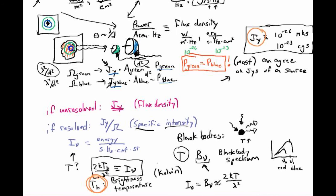Radio astronomers often use brightness temperature as a convenient way to describe the specific intensity of a region of sky. Brightness temperature sometimes corresponds to the thermal temperature of what you're looking at — whether it's the kinetic temperature or the electron excitation temperature. But sometimes it doesn't, and it's just a convenient unit describing locally how much energy is being picked up by your telescope per second, per unit of bandwidth, per collecting area, and per angular area of the beam on the sky.